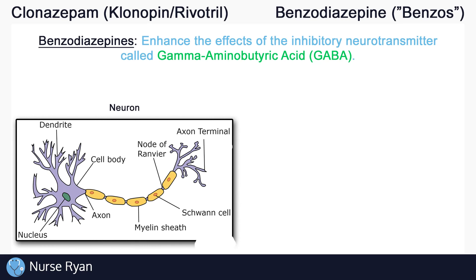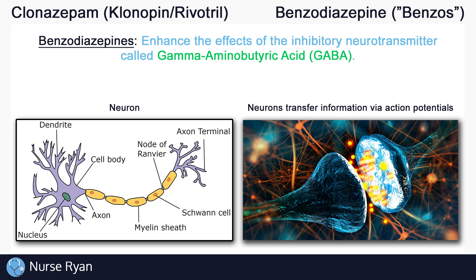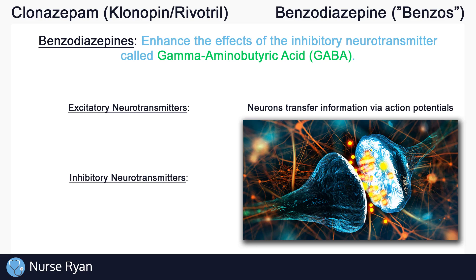In our body we have neurons that transfer information throughout the entire brain and body, and the way that this information gets from neuron to neuron is through electrical signals which we call action potentials. These action potentials are vital in the transfer of information throughout the body. We also have neurotransmitters which influence these action potentials. We have excitatory neurotransmitters and inhibitory neurotransmitters.